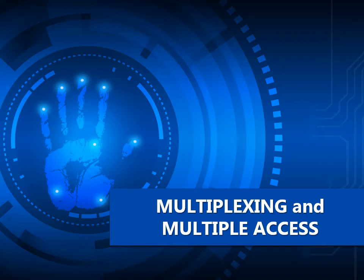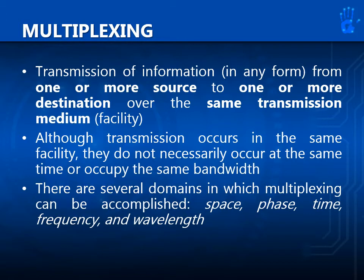Multiplexing is the transmission of information in any form from one or more sources to one or more destinations over the same transmission medium or facility. Although transmission occurs in the same facility, they do not necessarily occur at the same time or occupy the same bandwidth.